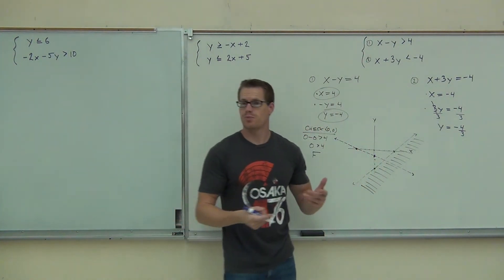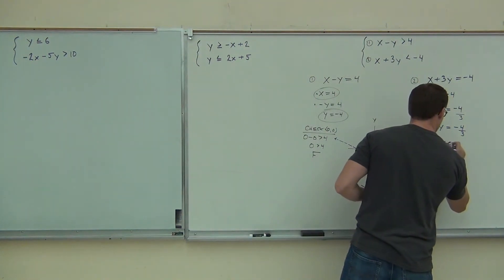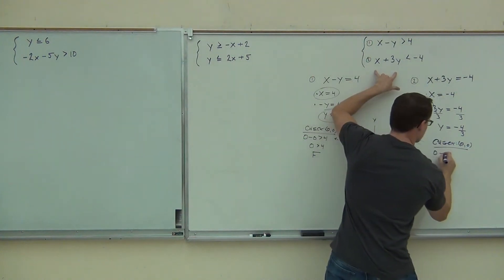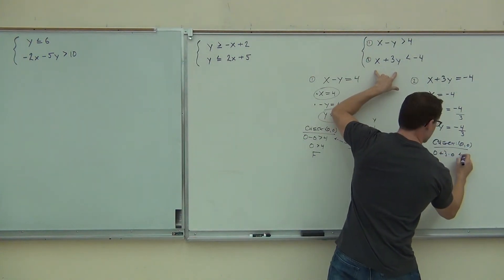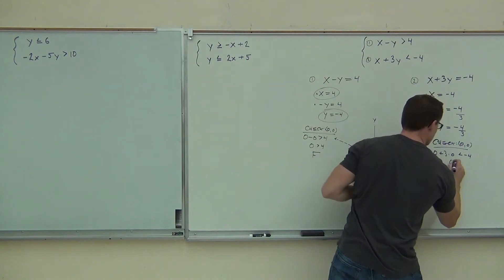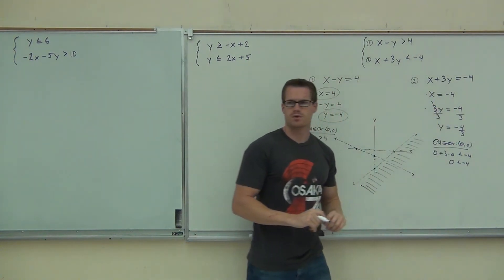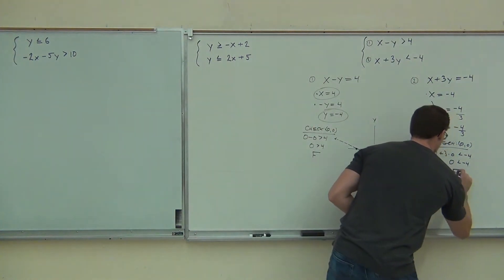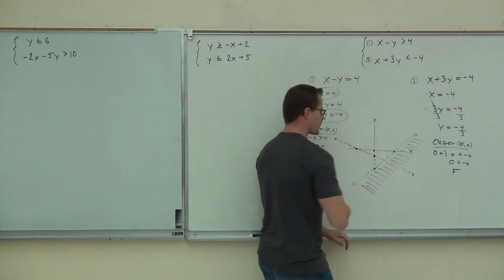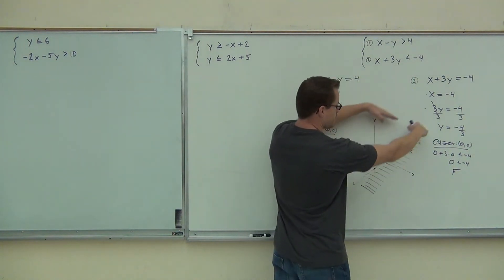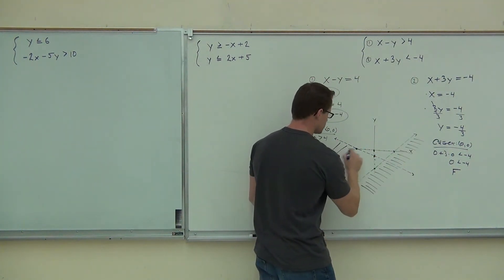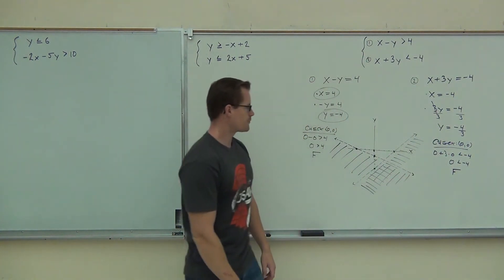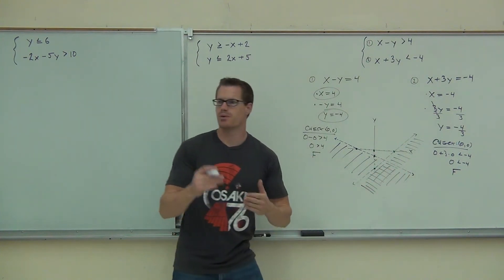Now we're also going to make that one dashed because, again, we don't have that equals. And we can still check the point zero, zero. So zero, zero, we have zero plus three times zero is less than negative four or zero is less than negative four. Is zero less than negative four? Is it true or false? False. Yeah, definitely false. So again, we checked zero, zero. It was false signifying that this half plane is wrong. This half plane is right. Shade all that stuff. And then right here, that's our solution set where we cross over.